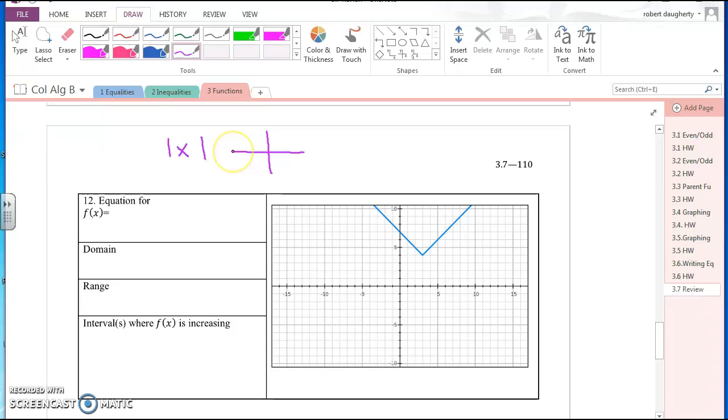And we know that that graph looks like this. So I just need to figure out what transformations have occurred. The best way with this one is to look at that origin. So the graph had to move from here to here.